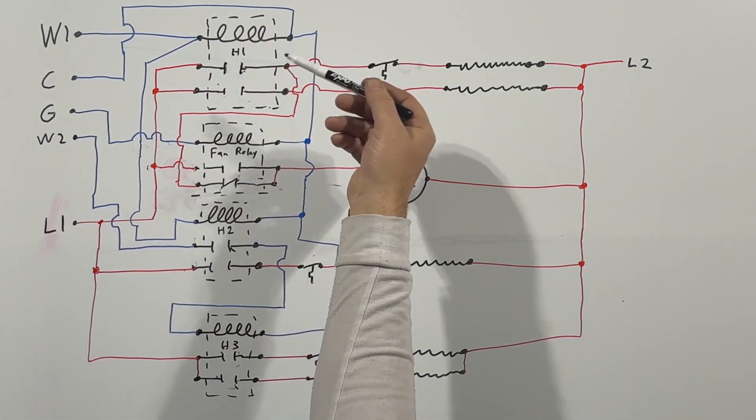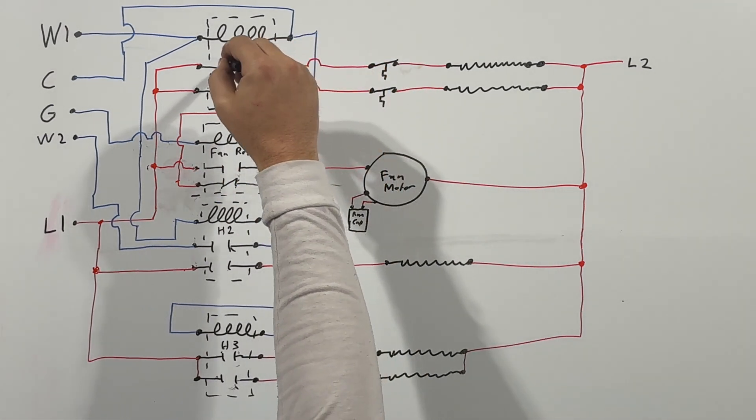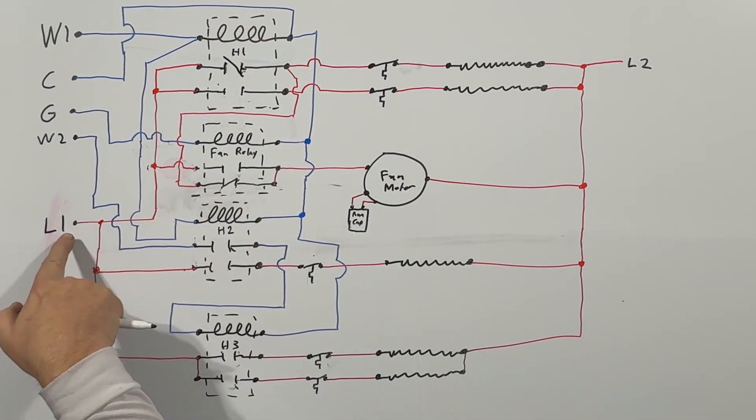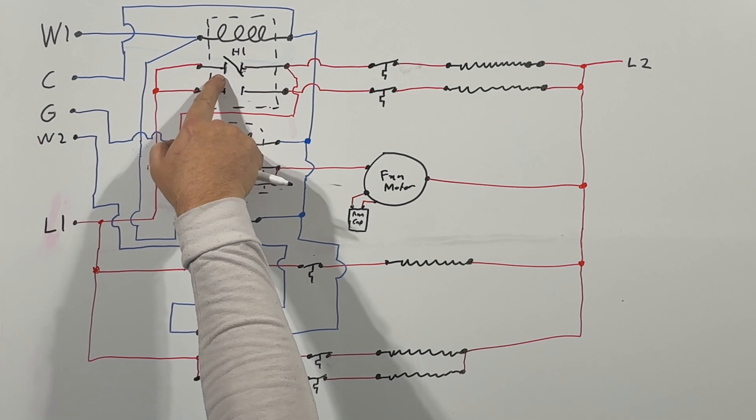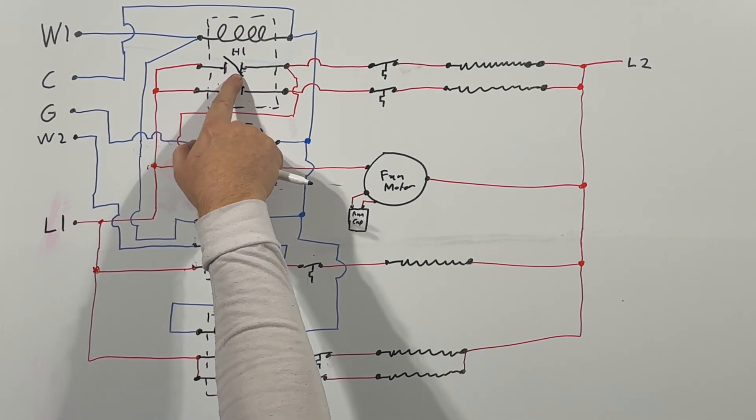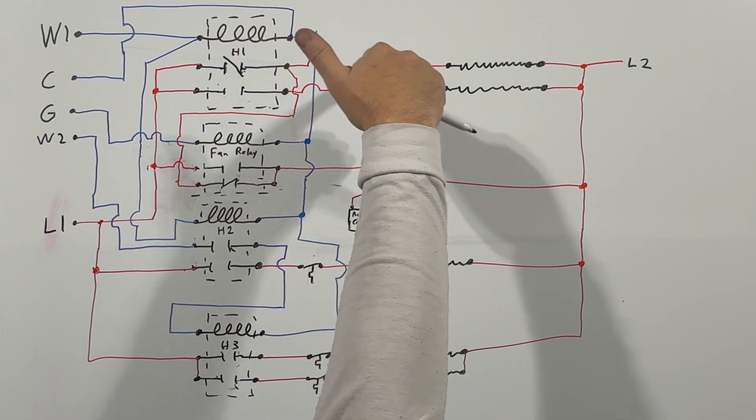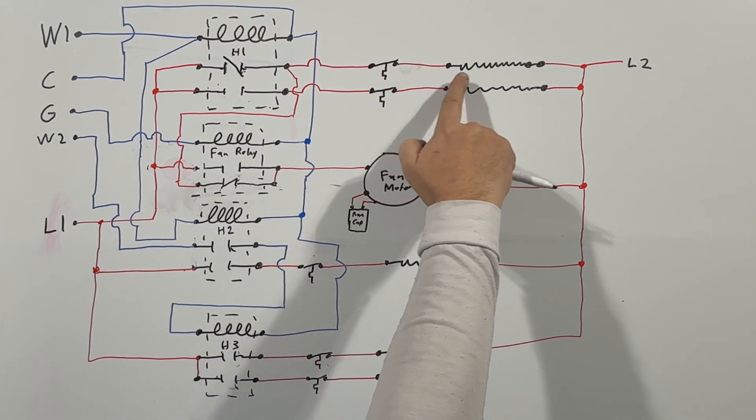So as it warms up, it's going to go ahead and start closing these contacts at different points, at different timings. So this first one is going to close, right? So we have our line one, which travels up here and goes into this first contact. When this closes, the high voltage will move through it and continue on through our high limit and then into our electric strip, which will energize and start heating.